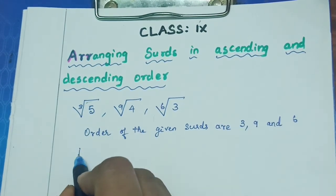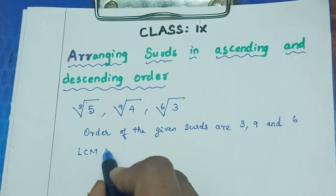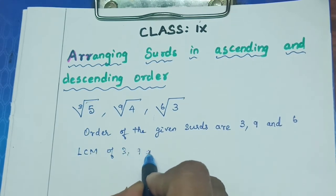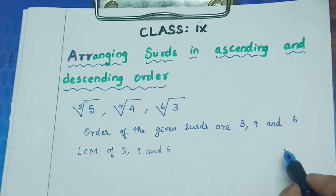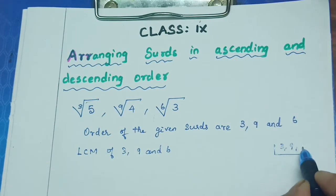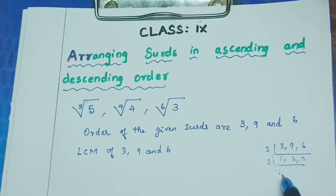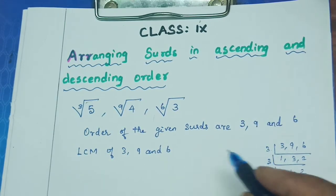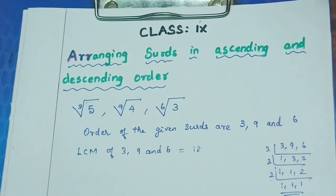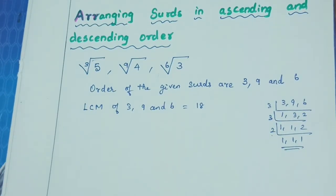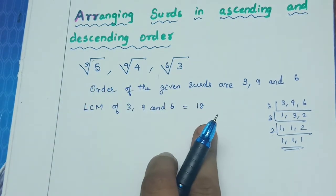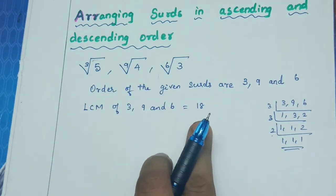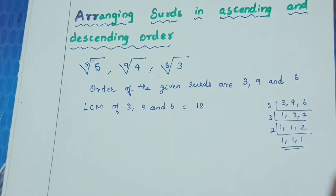Take the LCM of the three orders: 3, 9, and 6. Computing the LCM: 3 divides into 9 three times, and 2 gives 18. So the LCM is 18. The first step is taking the LCM, which is 18. We are going to convert all the surds into order 18.